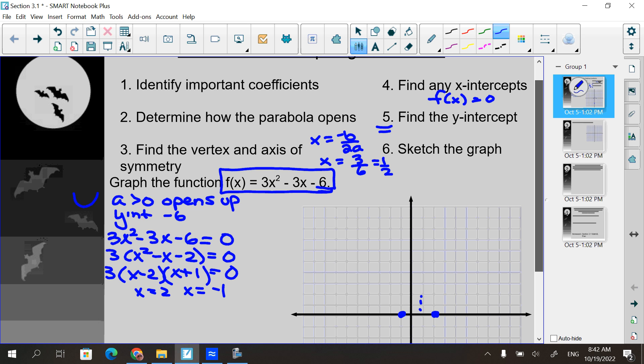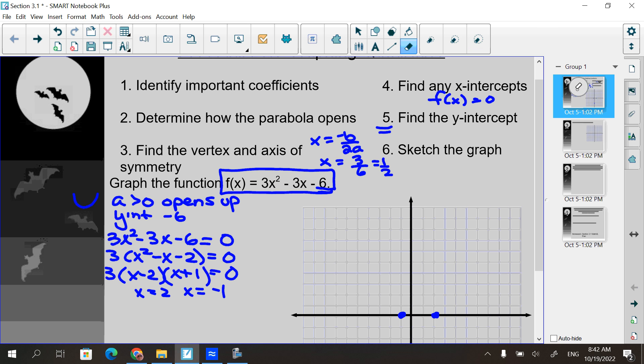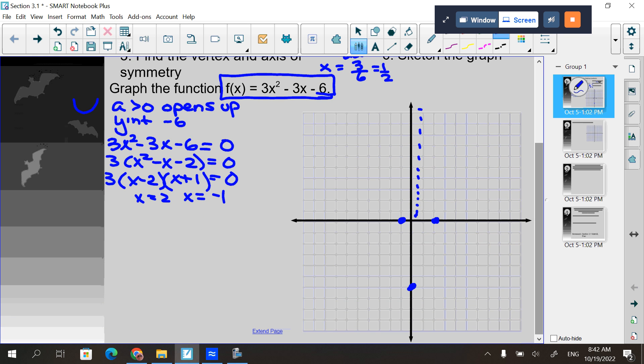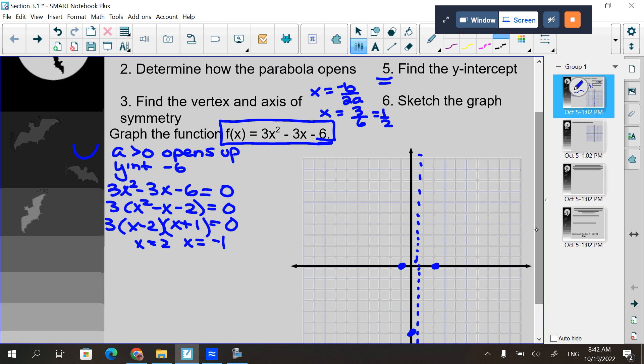So if I take those values from this equation, negative b is going to be three. Two times a is going to be six. So it's saying at x equals one half is the axis of symmetry. So that is my axis of symmetry. And my vertex has that x value. So it is a point that has the x value of one half. In order to find the y value, I have to plug it in here and find what f of one half is.